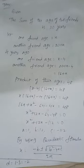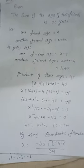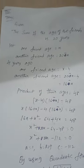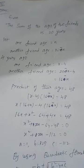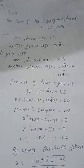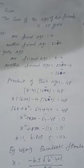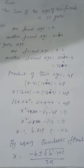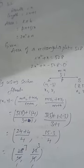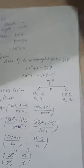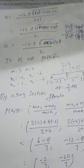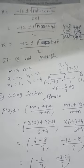Determine if the following situation is possible: the sum of the ages of two friends is 20 years; four years ago the product of their ages was 48. Let one friend's age = x, the other = 20 − x. Four years ago: x − 4 and 16 − x. Product = 48 gives x² − 20x + 112 = 0. The discriminant is negative, so it is not possible.